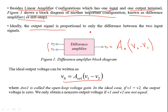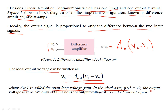Ideally, the output signal is proportional only to the difference between the two input signals, and the ideal output voltage is A_V0 times (V2 minus V1). If V1 equals V2, the output becomes zero because the difference is zero. We only obtain a non-zero output voltage if V1 and V2 are not equal. It's only the difference that gets amplified — the basic purpose is to suppress the common mode signal and amplify the differential signal.